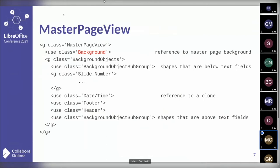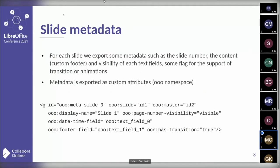What we are interested in is the first use element that references the master page background. In order to get a custom background exported correctly, we need to modify this class to make it aware that the slide owns a custom background, so that instead of referencing the master page when it creates the use element, it references the custom background. The master page view class needs some metadata information about the slide, represented by the slide number and the visibility of the several text fields that make up the master page.